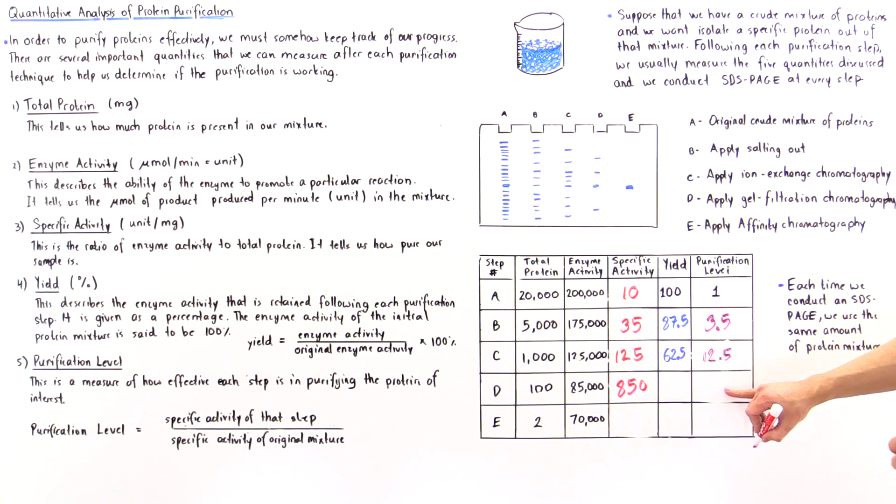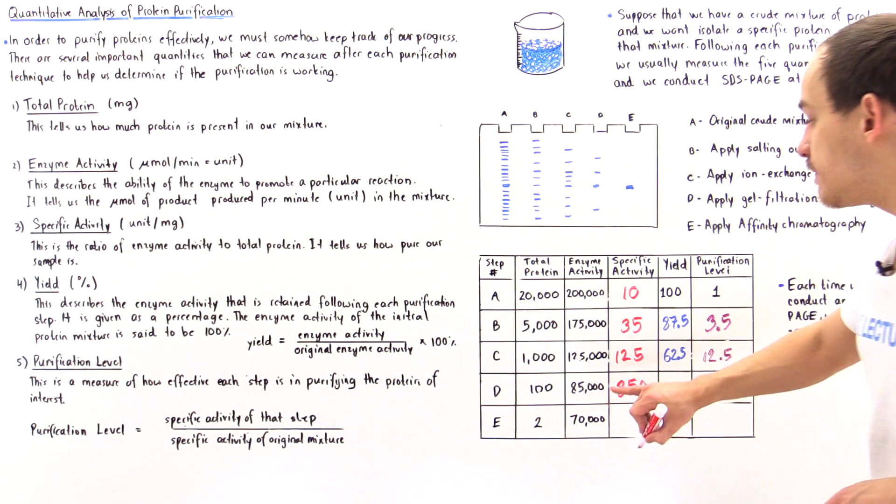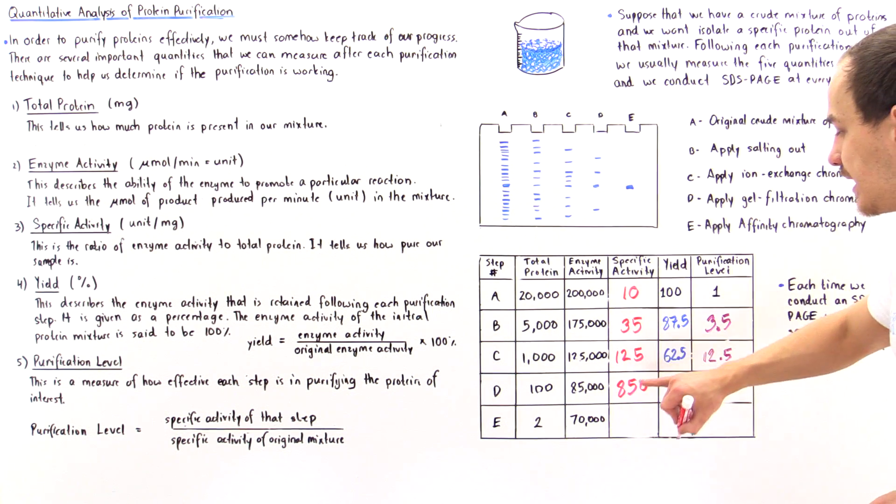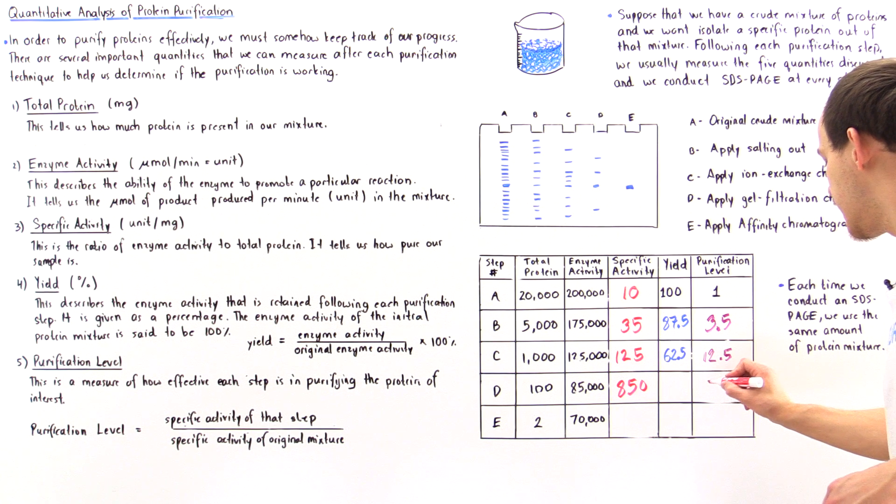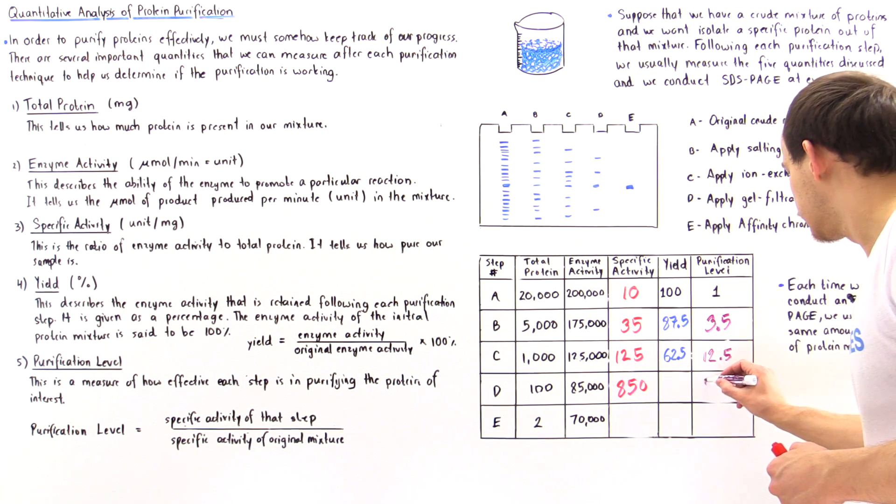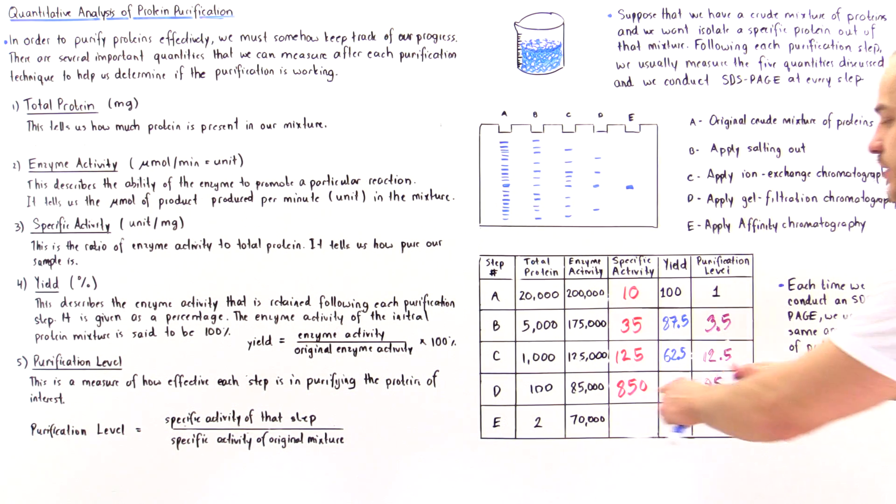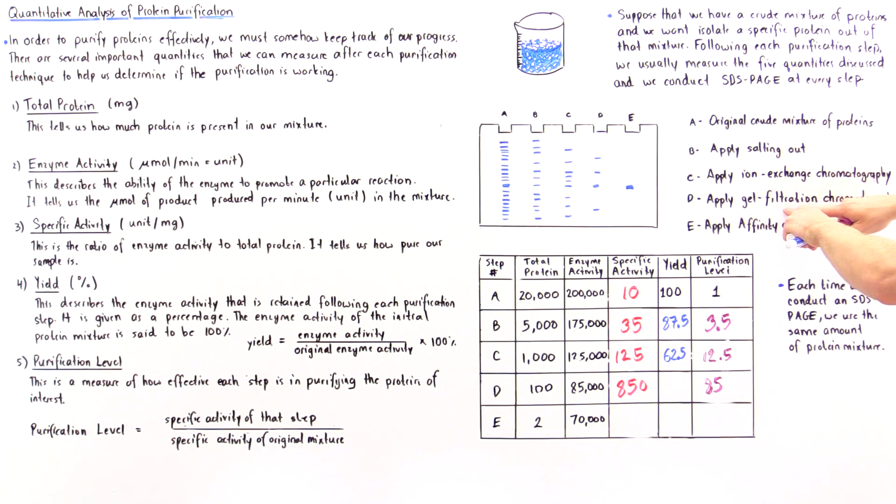To calculate the purification level, we take the specific activity of that mixture divided by the original mixture, and we get 85. This divided by this gives us 85.